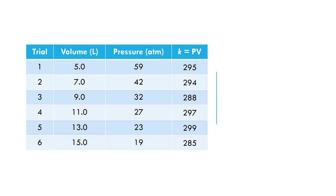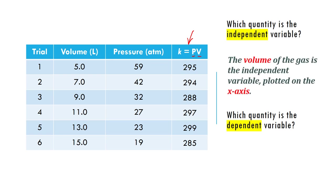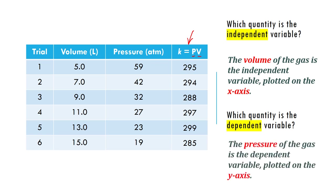These are data gathered from a simple experiment. In this setup, volume is the independent variable being changed, and pressure is the result of the changing volume. The K value in the rightmost column is found by multiplying pressure and volume. Volume is plotted on the x-axis and pressure on the y-axis.